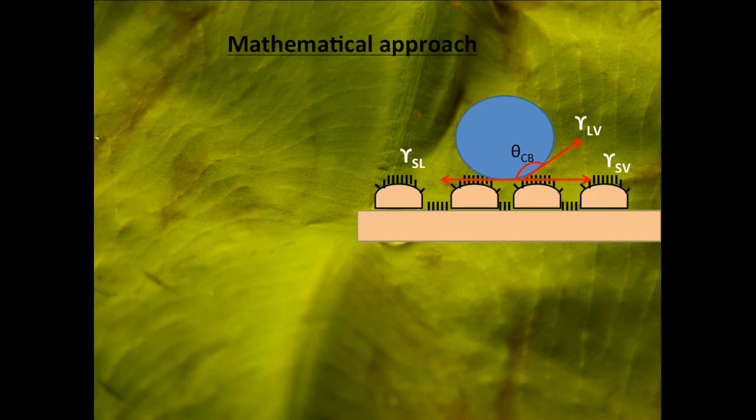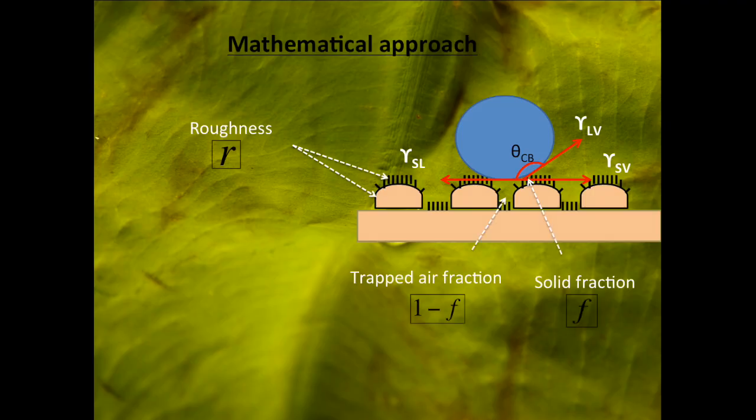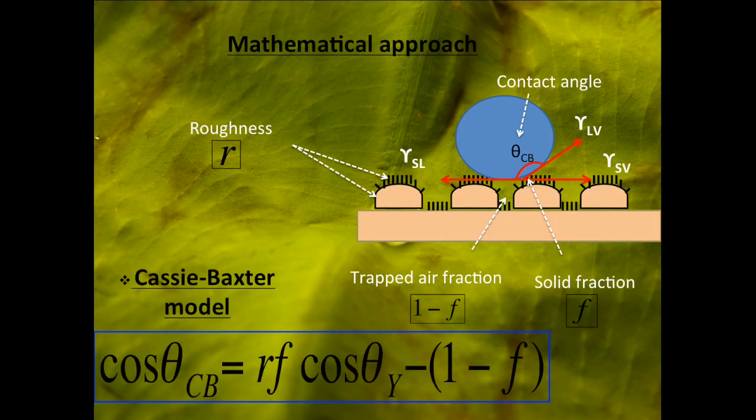The lotus effect can be explained mathematically by taking into account the solid fraction, air trapped fraction, roughness, and the contact angle measured by the Young equation on a flat surface. The equation shows that if the solid fraction approaches zero, the contact angle described by Cassie and Baxter will approach 180 degrees, which is hydrophobic.